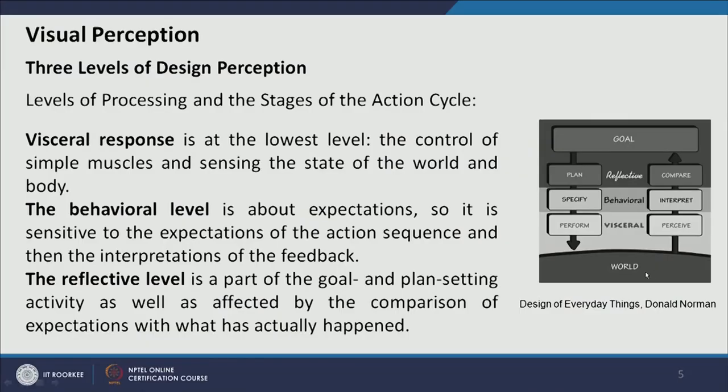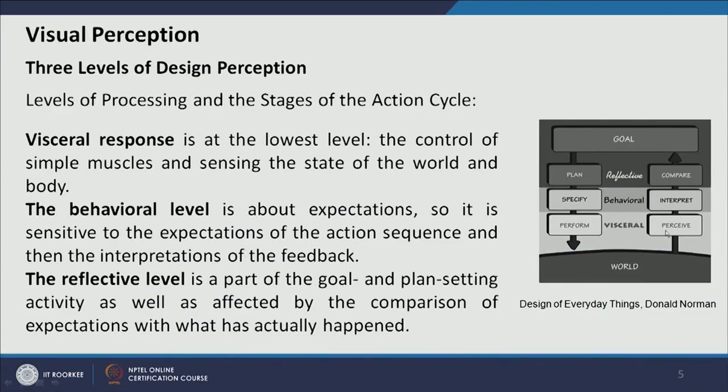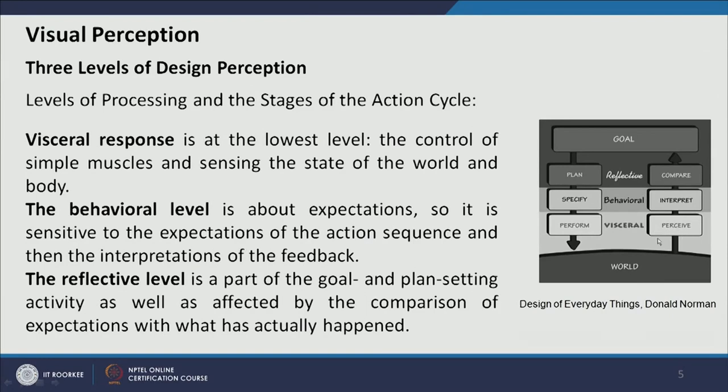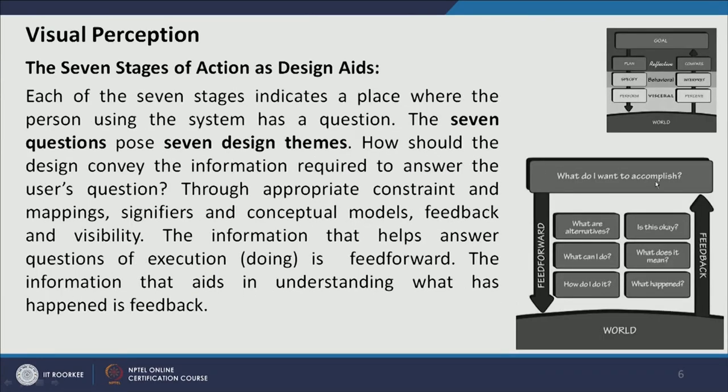There are seven stages of actions and design aids that happen between the user and the designer. These correspond from the same diagram, taken from 'Design of Everyday Things' by Donald Norman. Three actions happen from the designer's end: plan, specify, and perform. The other three are from the receiver's end: perceiving first, then interpreting, then comparing. From that: 'What happened?' is the perceive level; 'What does it mean?' is the interpretation level; 'Is this okay?' — whether the goal is fulfilled and whether the complete process is achieved — is the highest level of perceiving.